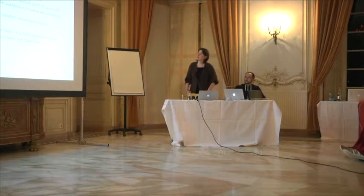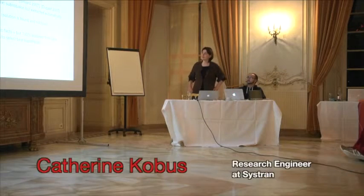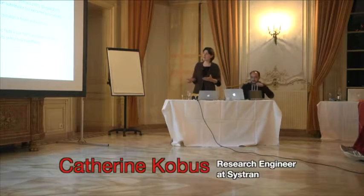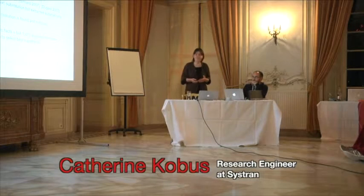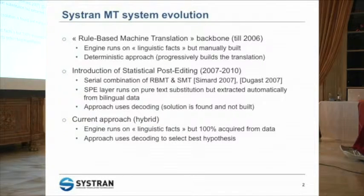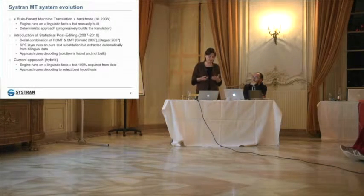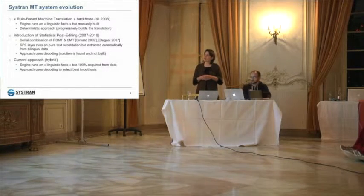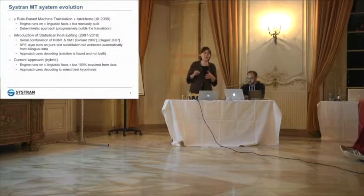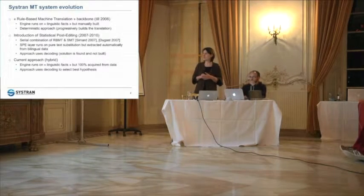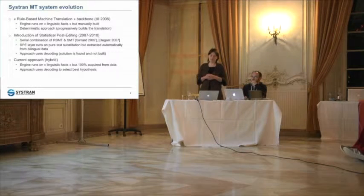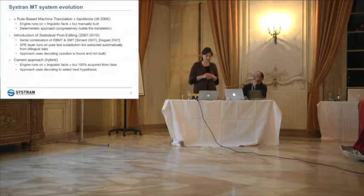First I will describe Cistron's context and the evolution of our engine. Historically, Cistron used a rule-based machine translation — an engine that runs on linguistic facts but is manually built. It's a deterministic approach because it progressively builds the translation. Since the year 2007 we introduced statistical post-editing.